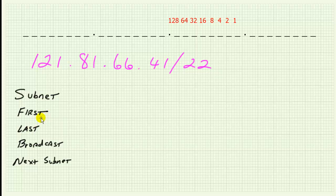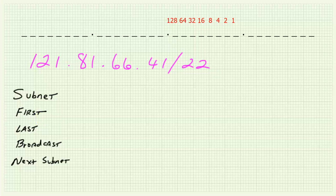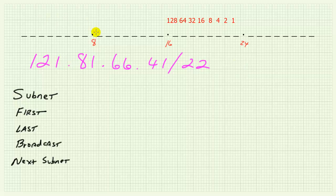Where I like to begin is to determine where the dividing line is between our network and subnetwork bits and the host bits. We're given a 22-bit prefix. I'm going to write an 8, a 16, and a 24 on the whiteboard to help visualize what's going on. We know that at each octet boundary we've got 8 bits from the left, then 16, and then 24 at the boundary between the 3rd and 4th octets. So with a 22-bit prefix, where does that dividing line fall?